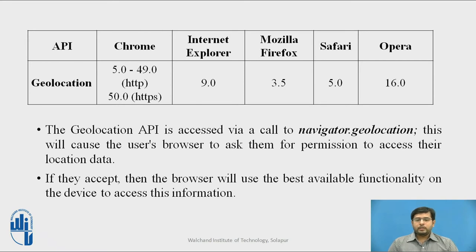Geolocation API is accessed via a call to navigator.geolocation. This will cause the user browser to ask them for permission to access their location data. If the user denies the permission, the location will not be sent to the web server and the location service or the script that we have written to get the location will not be executed. If they accept it, then the browser will use the best available functionality on the device to access the information.